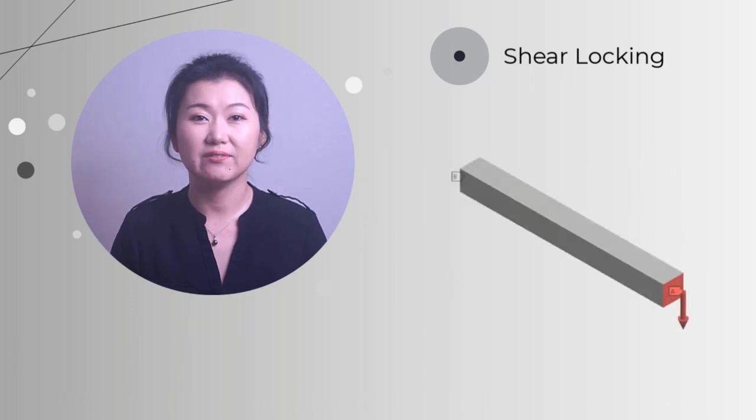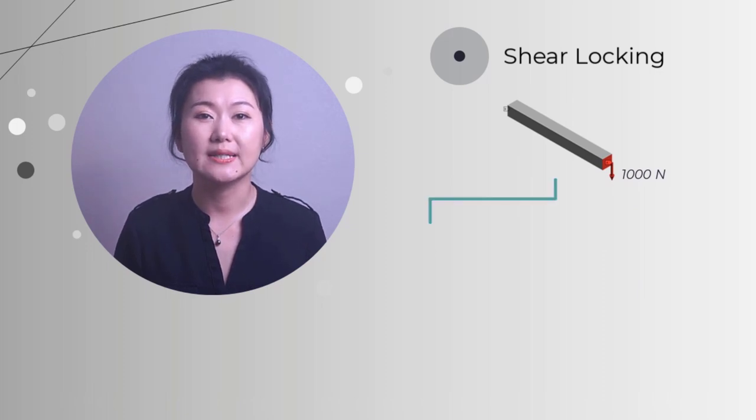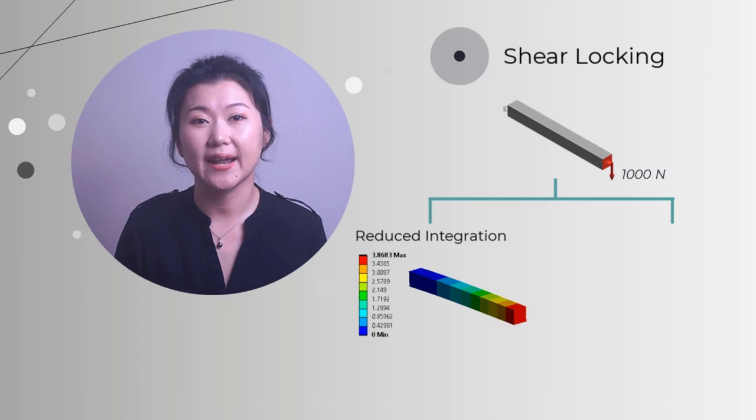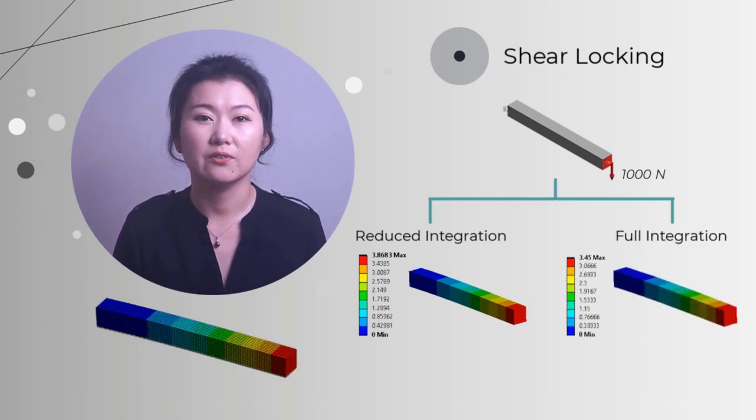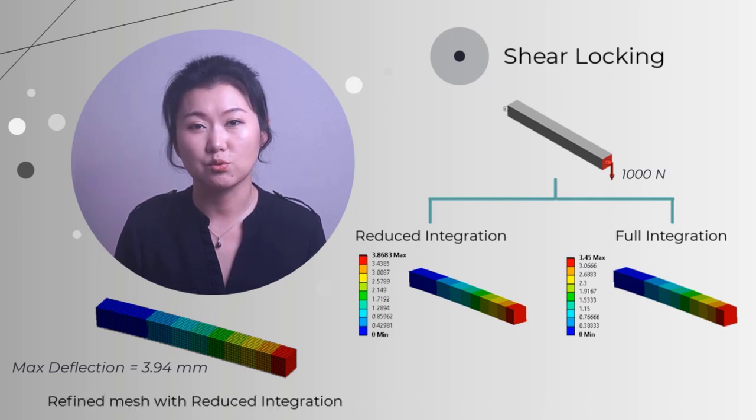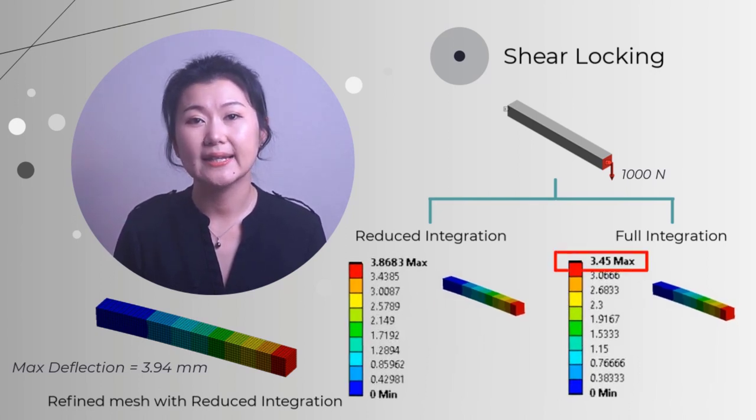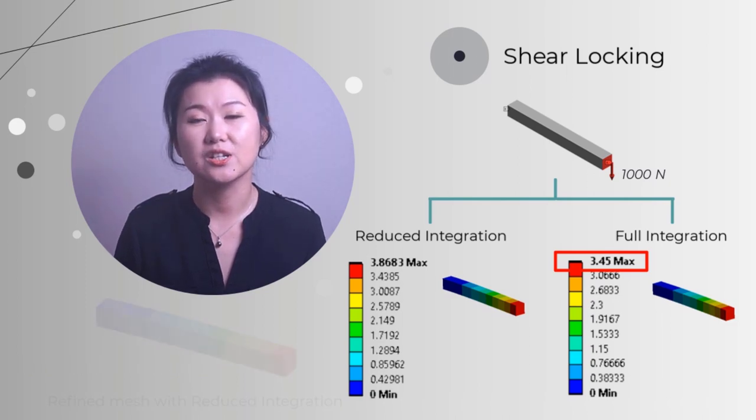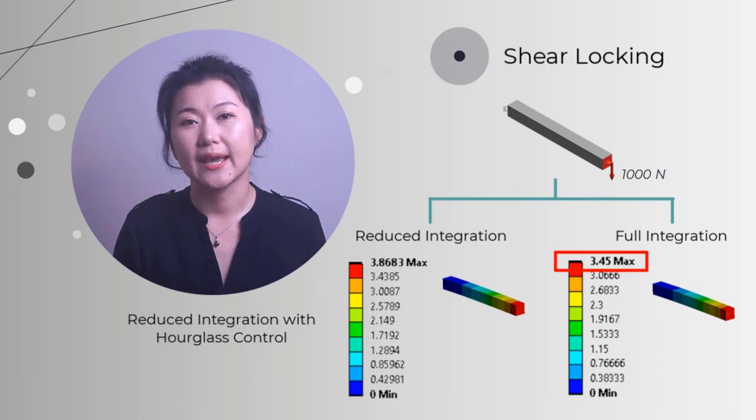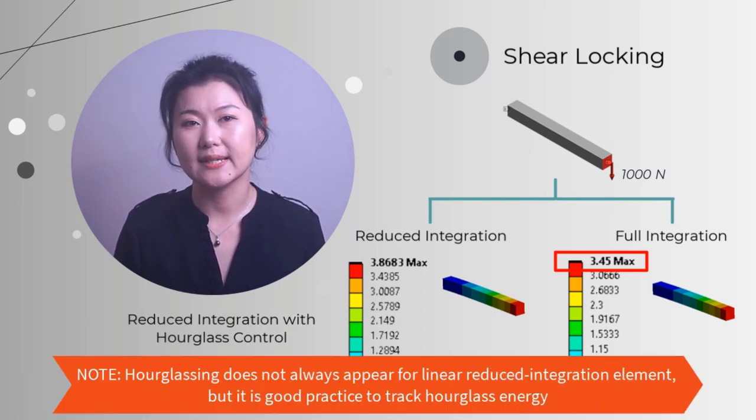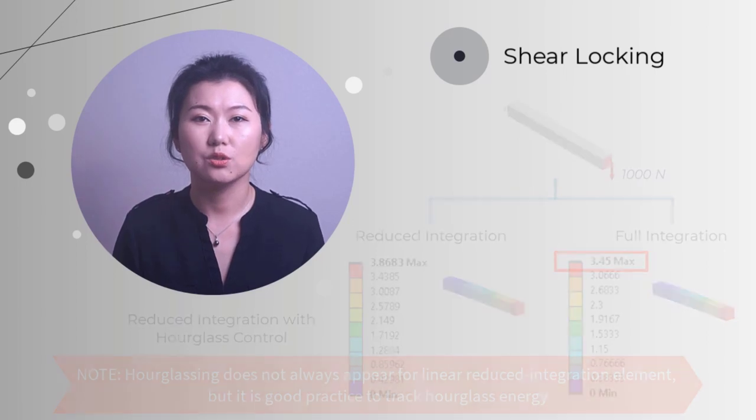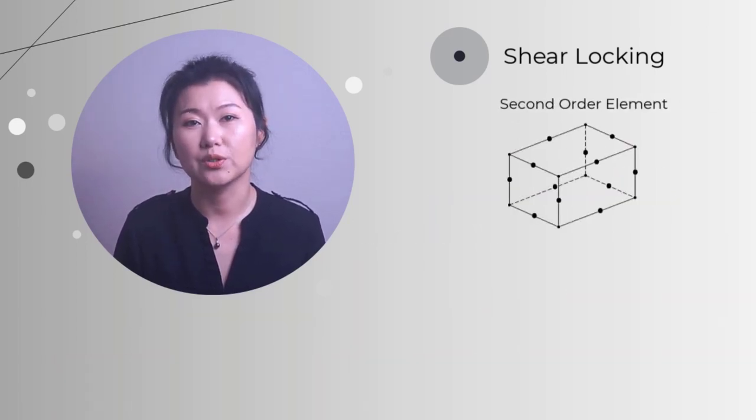Let us check this simple cantilever beam problem. We have the beam fixed at one end, and a force of 1000 newton is applied at the other end. The problem is solved twice. One is with linear hex element using reduced integration, and the other is linear hex using full integration. And we have a reference solution solved by a much refined model using linear hex with reduced integration. Due to shear locking, we can see that linear hex element with full integration is overly stiff and leads to lower deflection. Upon existence of shear locking, we can consider switch to reduced integration and use hourglass control. Note that hourglass does not always exist for linear reduced integration element, but we do need to carefully track the hourglass energy.